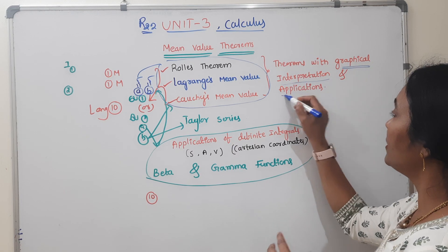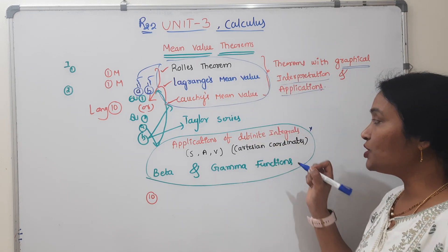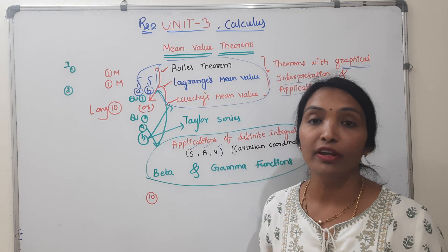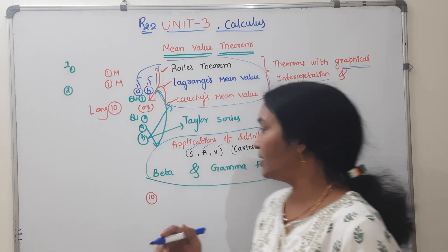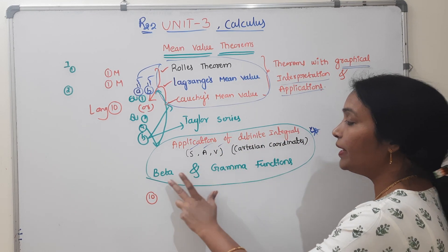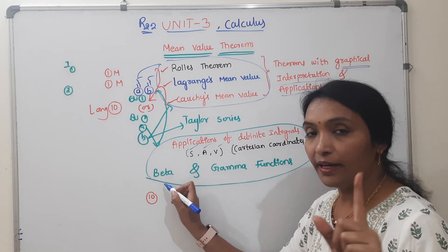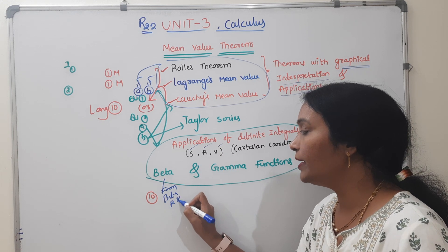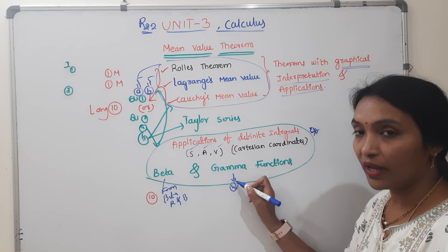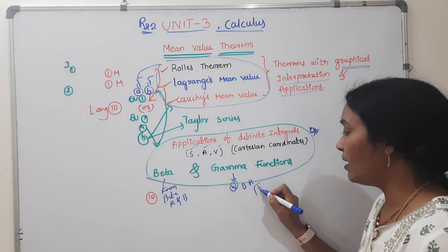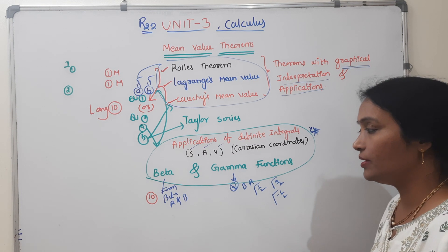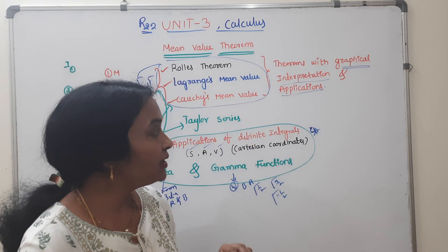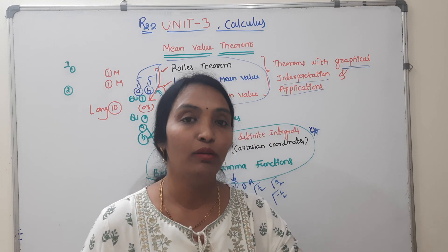Applications of definite integrals are only in Cartesian coordinates — surface, area, and volume are very important. I will cover it as soon as possible. My compulsory topics are beta functions and their properties, and the relation between beta and gamma. Gamma has 4 properties. Beta-gamma relations and problems — gamma(1/2), gamma(9/2), and gamma(-1/2) — are all important. If you choose this unit, you will see the minimum score.